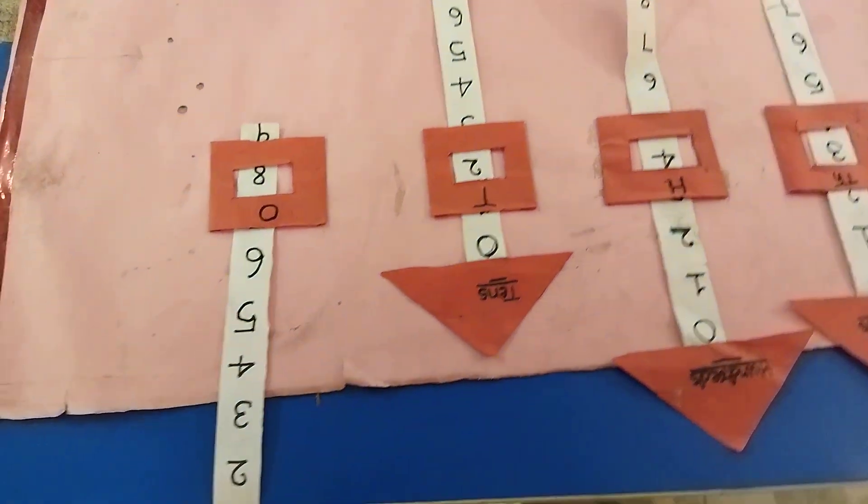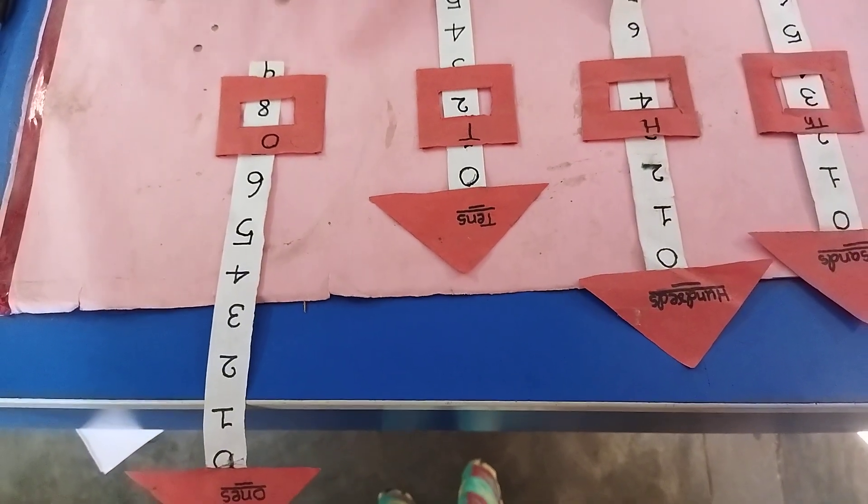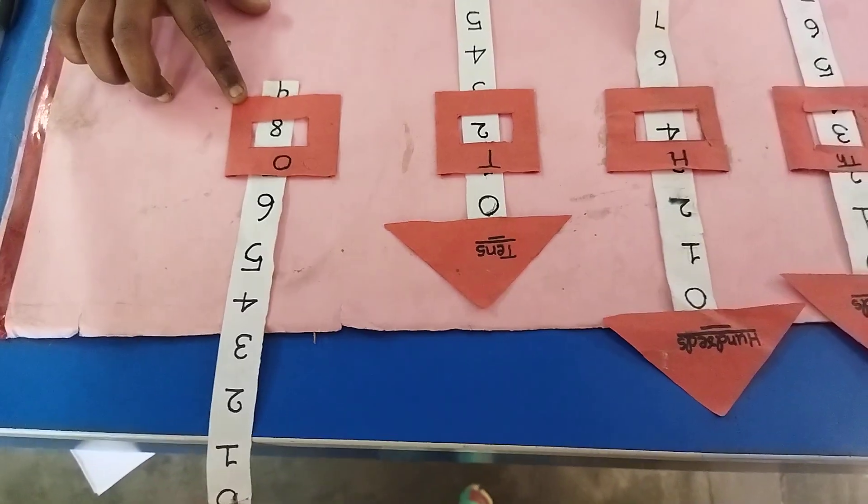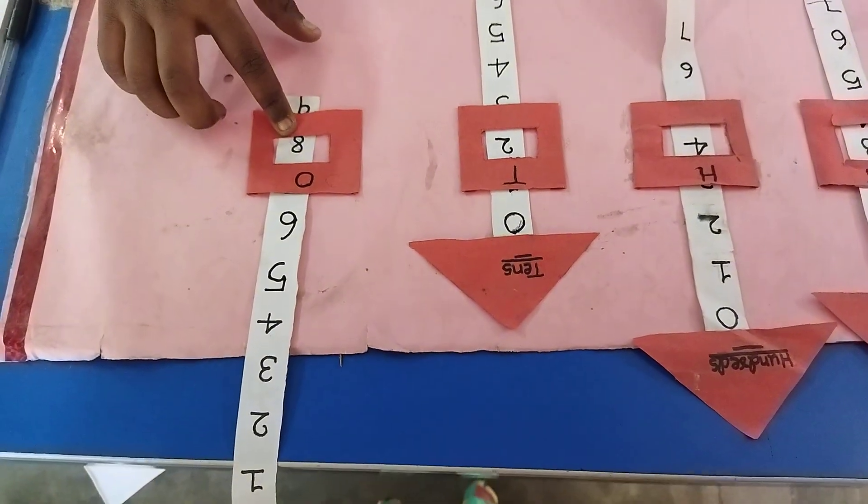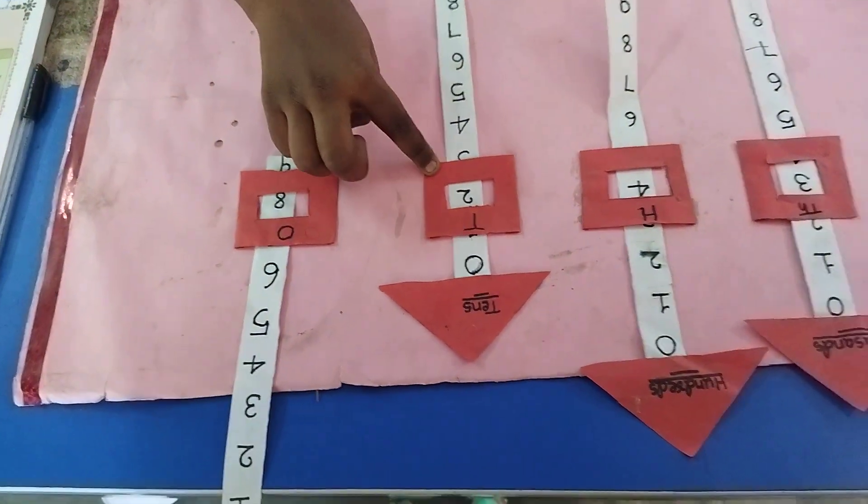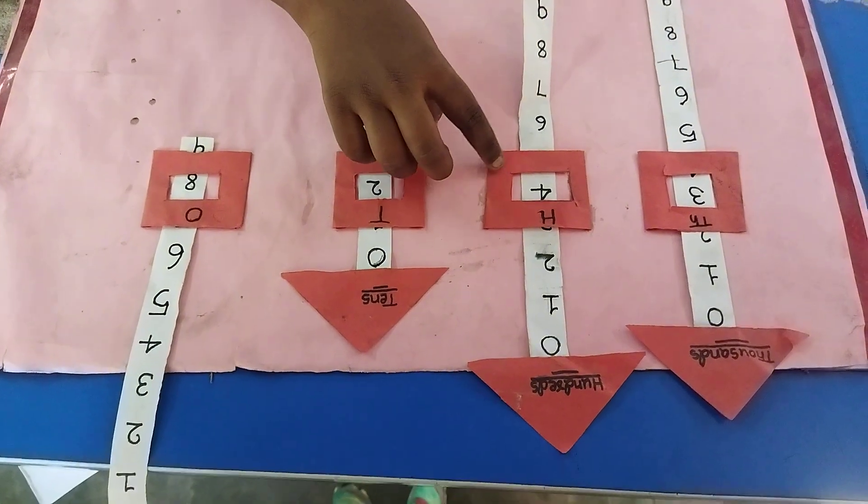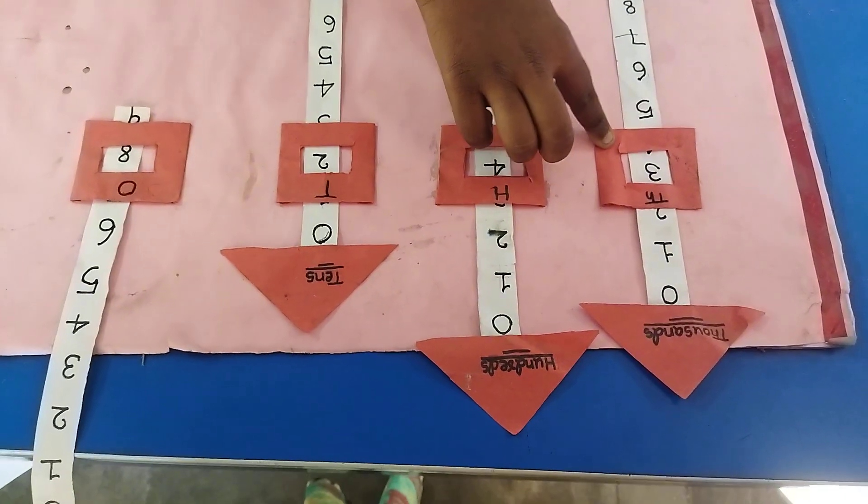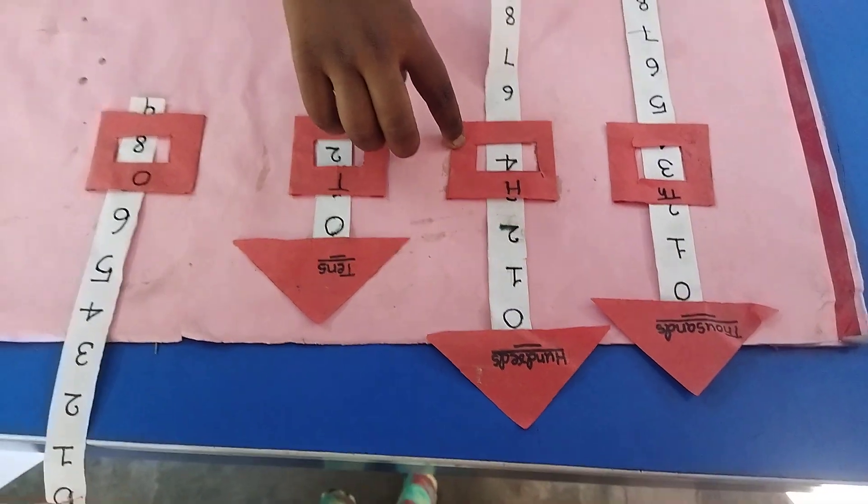Place value. 1s place, 2 value. 10s place, 3 value. 1000s place, 4 value. 100s place.